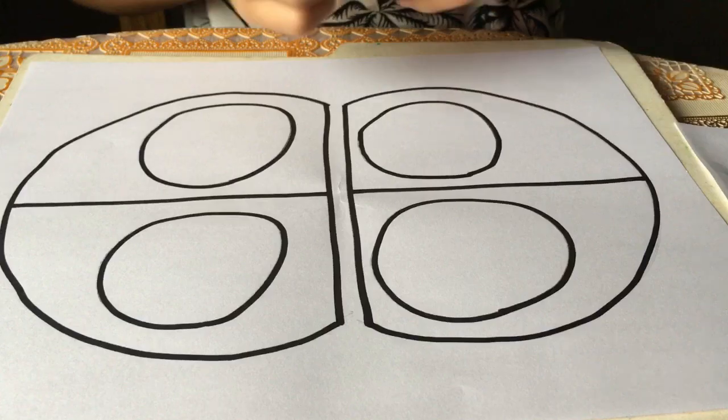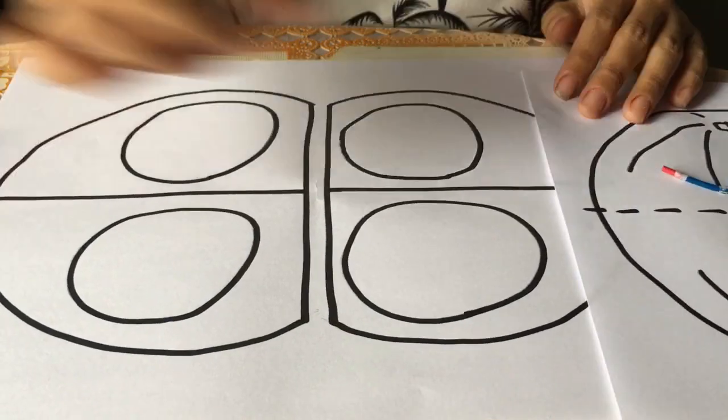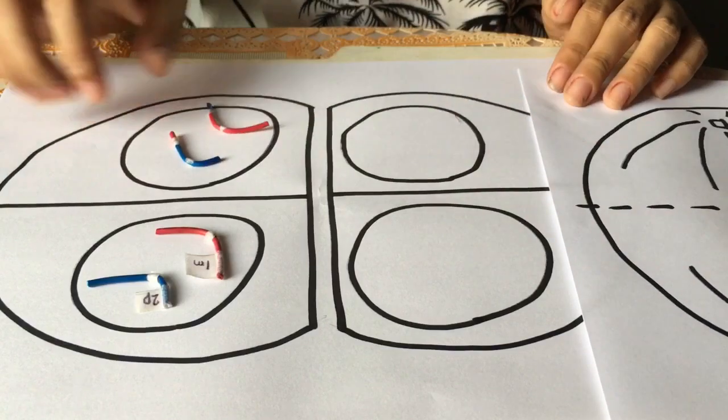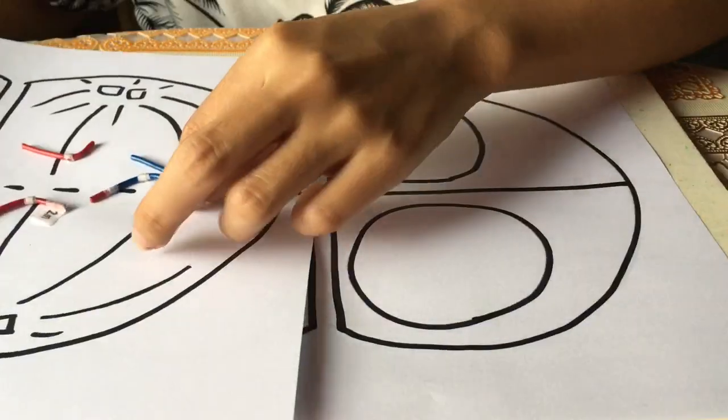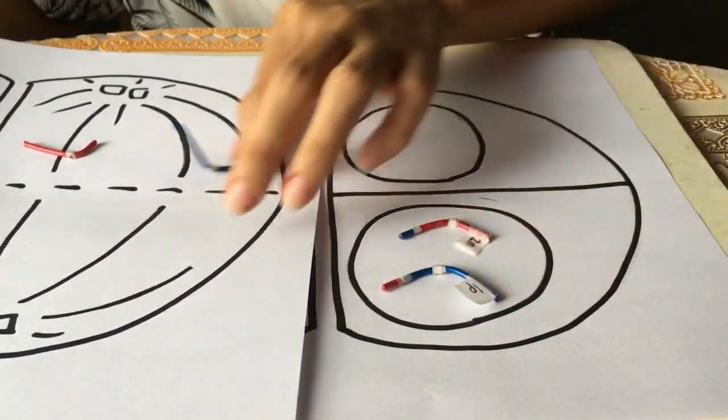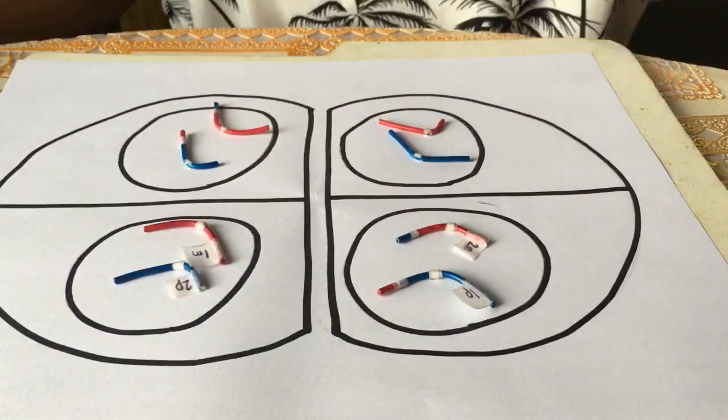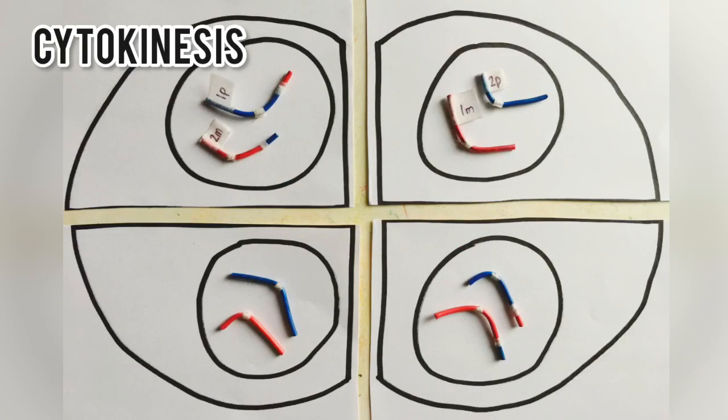In metaphase II, a membrane forms around each set of chromosomes to create two new cell nuclei. This is the last phase of meiosis. However, cell division is not complete without another round of cytokinesis. Once cytokinesis is complete, there are four granddaughter cells, each with half a set of chromosomes.